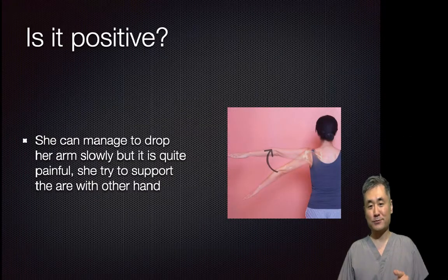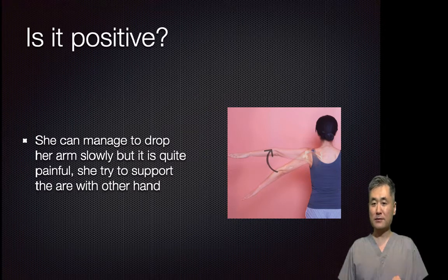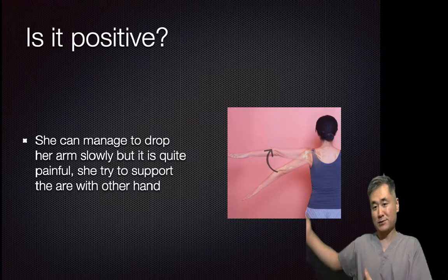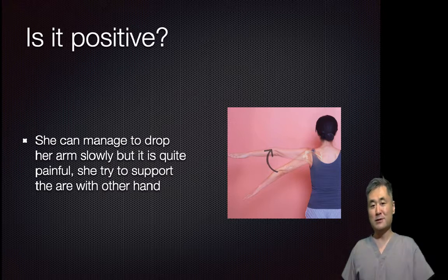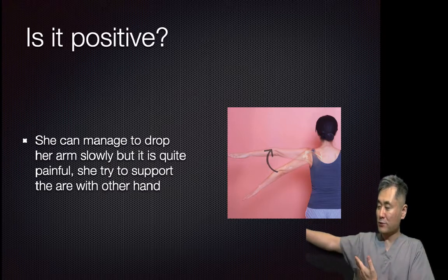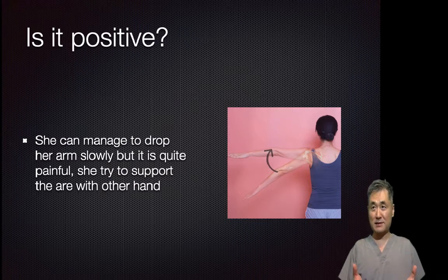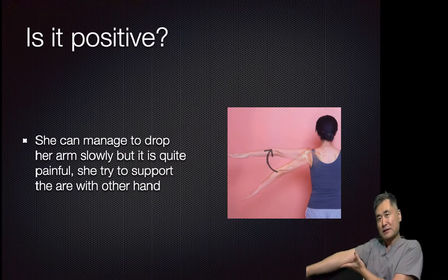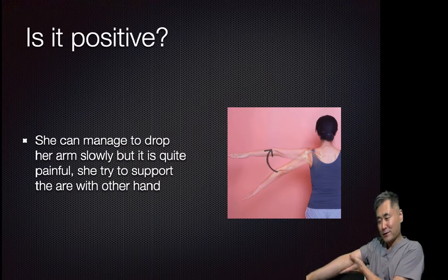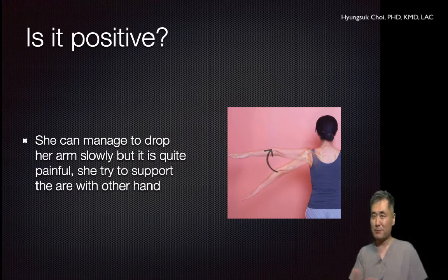Let me start with a question about physical examination: is it a positive sign? Usually we learn that the positive sign of a drop arm test is the patient just dropping their arm — literally the name of the test. But many of my patients showed a different result: they can lower their arm slowly. This is not the positive sign in the conventional textbook way, but many patients complain they can lower their arm but it hurts, so they support the arm with the other hand. Is it positive? What do you think?